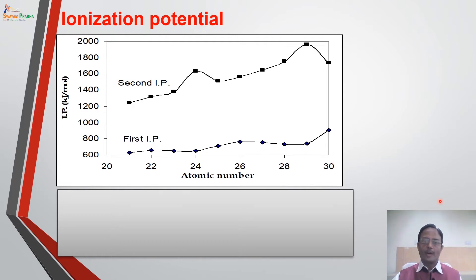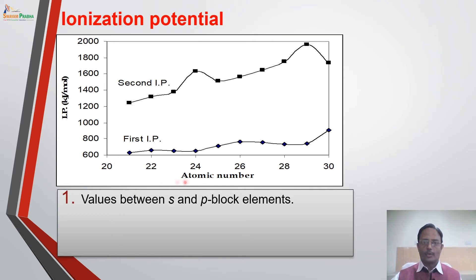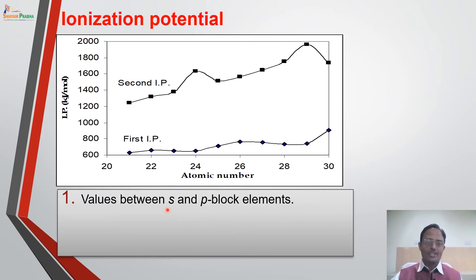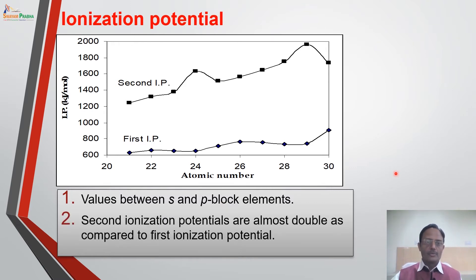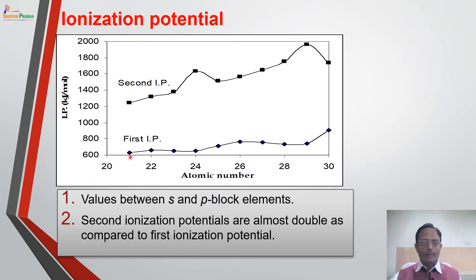Looking at the important observations: the first ionization potential values are of the order of 600 to 800 kJ per mole. These values are exactly between the S and P block elements — S block elements have lower ionization potentials and P block elements have higher ionization potentials. The second ionization potential values are of the order of 1200 to 1400 kJ per mole, almost double compared to the first ionization potentials.